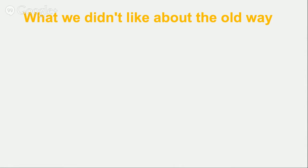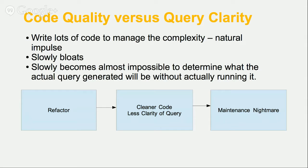What we didn't like about that approach: essentially, as we improved code quality — as we introduced best practices, design patterns, and tried to refactor — the codebase slowly bloated so that the query building was split across 10 or 15 classes. That essentially made it almost impossible to look at what the query would be by looking at the code. As the code improved, actually understanding the end result of it just became much harder and became an absolute nightmare.